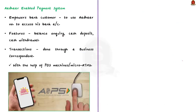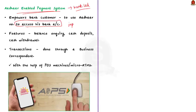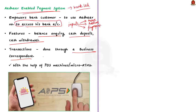Now we will see about the Aadhaar-enabled Payment System (AePS). It is a payment service which empowers a customer to use Aadhaar as an identity to access his or her Aadhaar-enabled bank account. The only inputs required for a transaction are bank name, Aadhaar number, and fingerprint capture during enrollment. With the help of these, customers can perform banking functions like balance inquiry, cash deposit, or even cash withdrawal. These banking transactions are done through a business correspondent of the respective bank, who carries out Aadhaar authentication before the transaction.